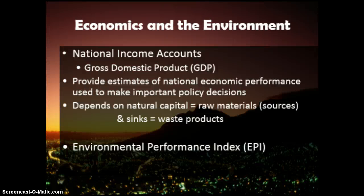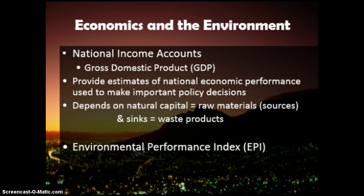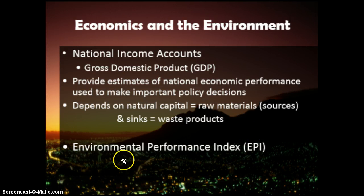When economists do their calculations, there are important indices they follow. National income accounts measure the total income of a country in a year. The one you should know is the gross domestic product, or GDP — the annual economic value of all goods and services produced in a country. The problem with GDP is it doesn't account for the harmful effects of waste products. We sometimes also use an environmental performance index, or EPI, which measures a country's commitment to environmental problems and resource management. Notably, the US has one of the higher GDPs but a very low EPI compared to other highly developed countries.